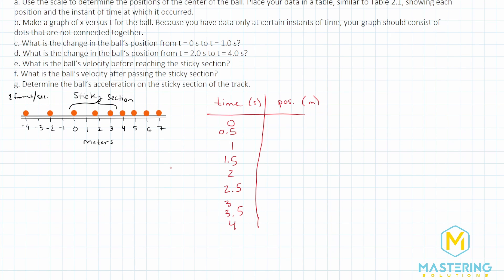Now that we have all of the times, we have spots numbered one through nine for each row. So now we have a place for every single ball, and we need to figure out what the position was for each of these.